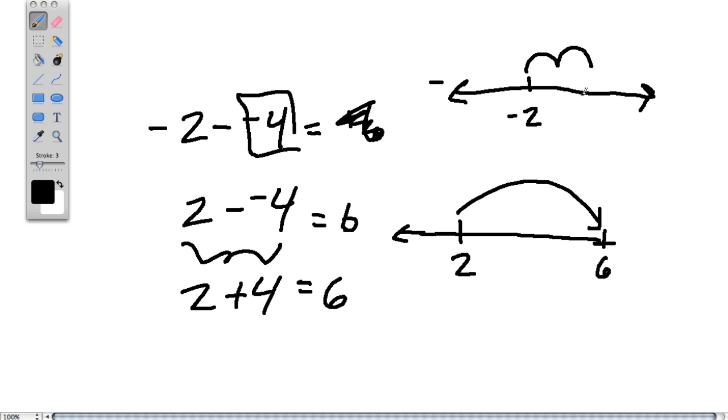and if we count, we hop up twice to 0, and then two more times to the answer, positive 2. So the number line helps us understand what is happening here.